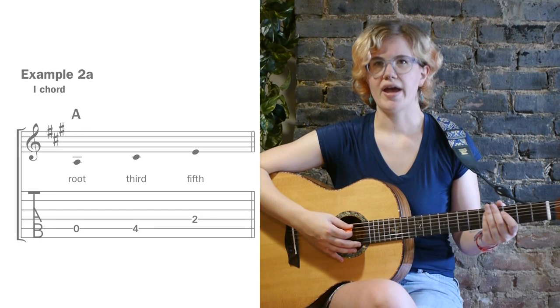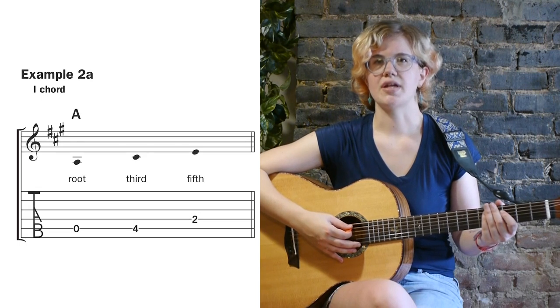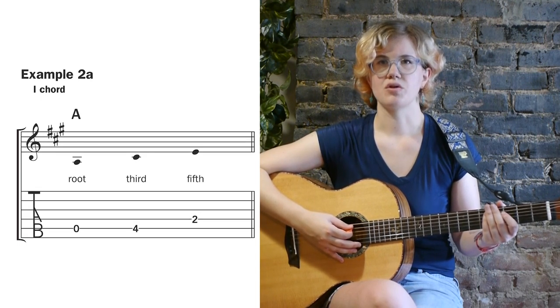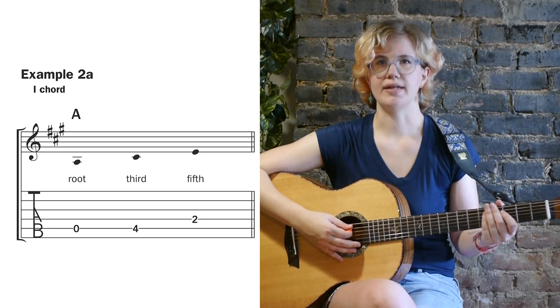Example 2A shows us the notes in A major, the major 1 in the key of A. The notes are A, C sharp, and E.